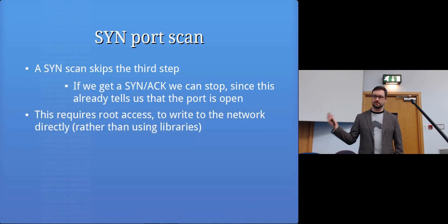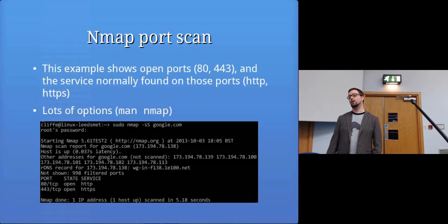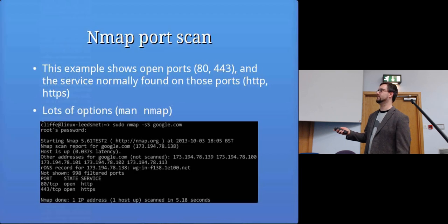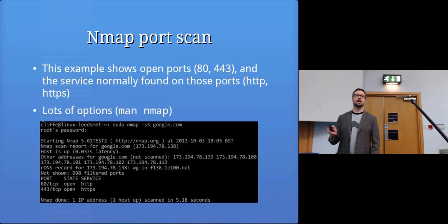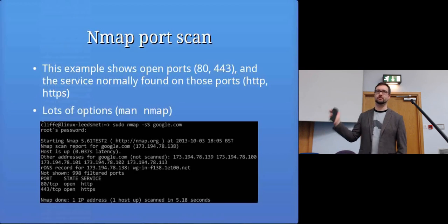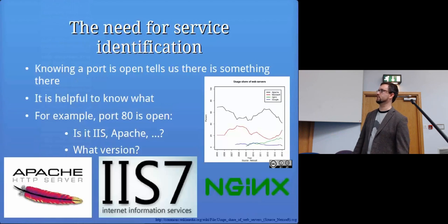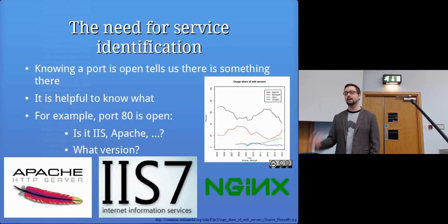On a Linux system you need root access to do a SYN scan because you need to write to the network directly. To do a port scan with Nmap it's simply 'nmap -sS' followed by the IP address or hostname, and that will do a SYN scan. By default Nmap scans about 1,000 ports — it doesn't do every single one, it chooses ones likely to hit. Here you can see it responded back with two open ports: port 80 and port 443, both web servers, which is Google's server running.